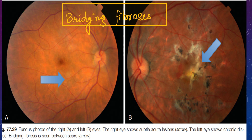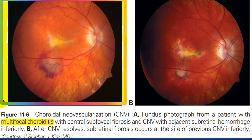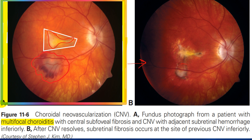An important feature of chronic multifocal choroiditis is bridging fibrosis. Two scars develop subretinal fibrosis that appears to connect or bridge them — hence the term bridging fibrosis. In this picture, you can see an area of subretinal fibrosis and below it an area of subretinal hemorrhage, probably indicating a choroidal neovascular membrane. After treatment, the CNVM has subsided and the fibrosis has become more consolidated.